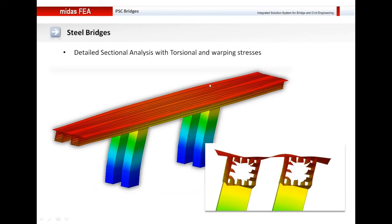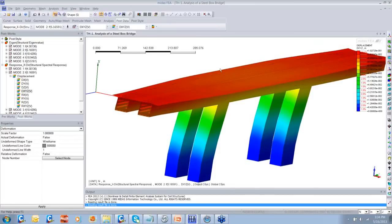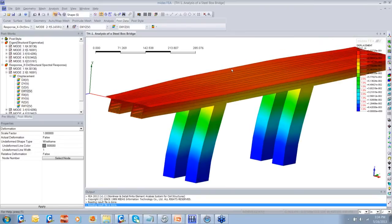If you are working on curved steel bridges and want to study the effect of torsion or obtain the warping stresses, you can use Midas FEA for that. In this particular example, I've shown how the cross-section distorts after response spectrum analysis is performed. Let me open this model and show you how you can obtain results for steel bridges. On your screen now is a steel bridge model where response spectrum analysis has been performed.